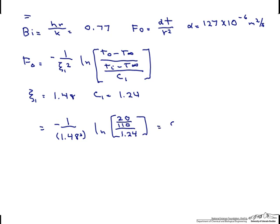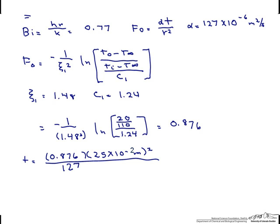So our time is our Fourier number times r squared divided by our thermal diffusivity. And using this way, we're going to end up with a time of 4.3 seconds.